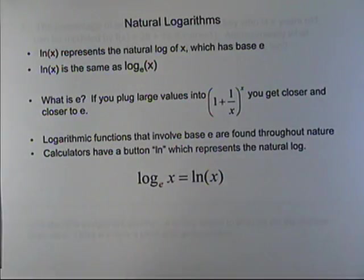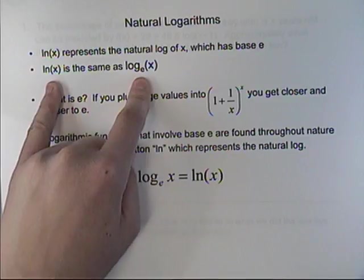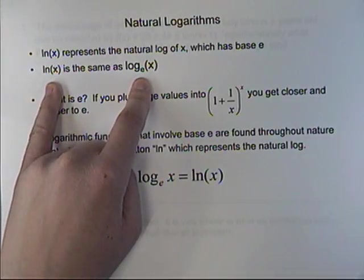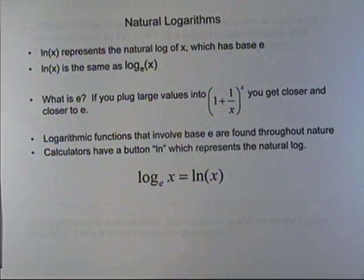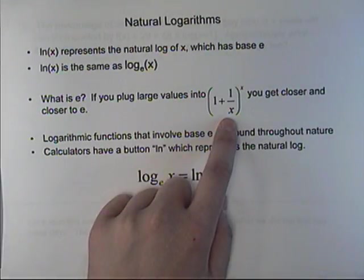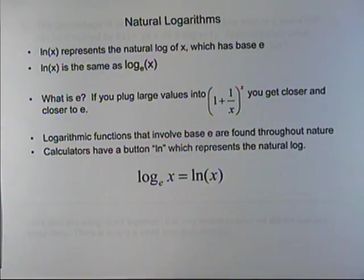Natural logarithms. Again, that's just the same as log base e. This and this mean exactly the same thing. ln(x) is log base e of x. What is e? Well, e is basically a horizontal asymptote where these values get closer and closer and closer to.